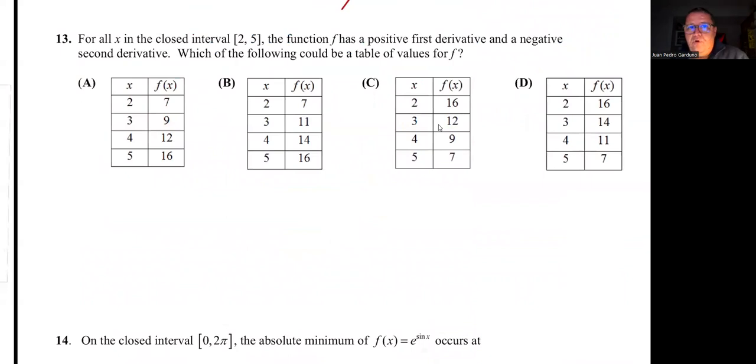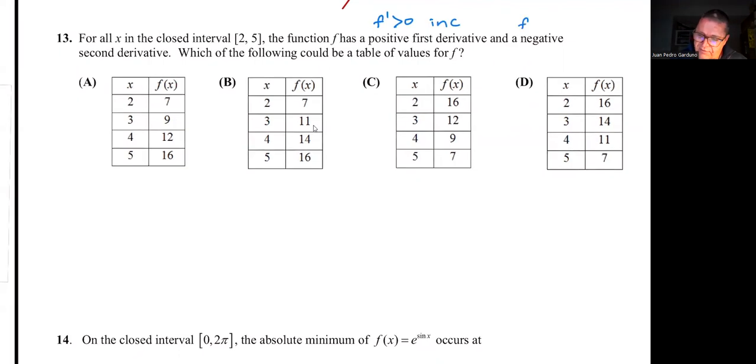Number 13 says, for all x in the closed interval from 2 to 5, we can see that all the tables go from 2 to 5. The function f has a positive first derivative. What does a positive first derivative mean? So f' greater than 0 means increasing. And a negative second derivative. So f'' is negative, which means concave down.